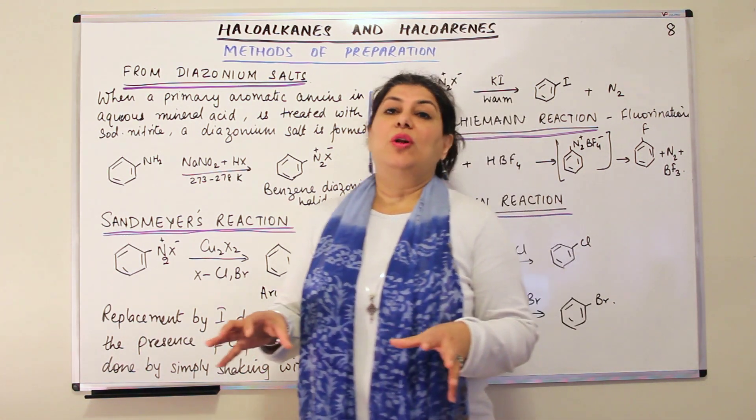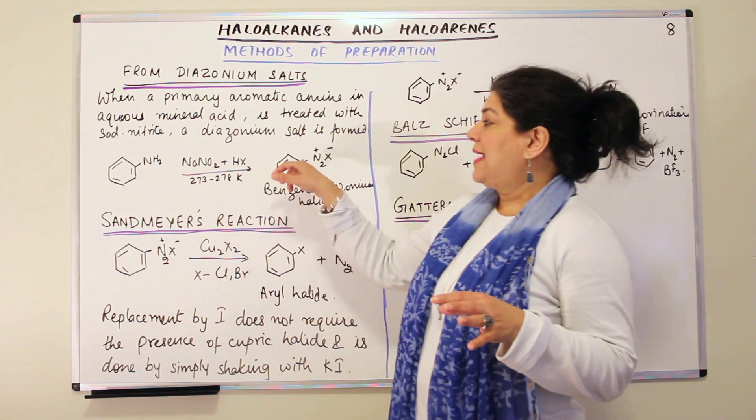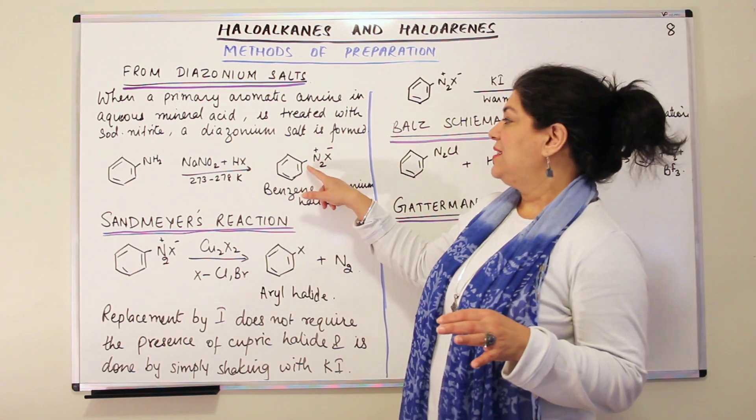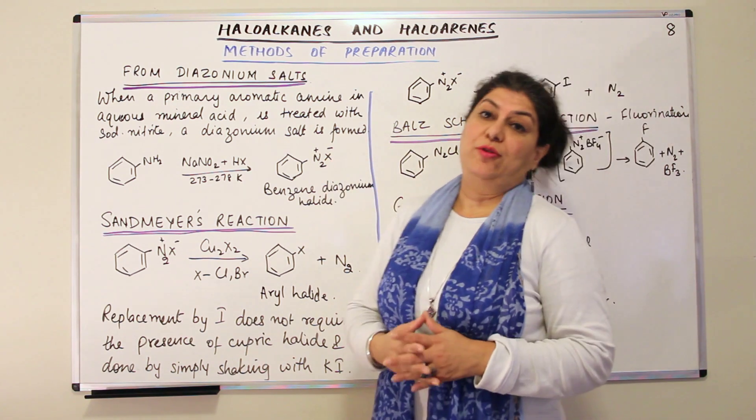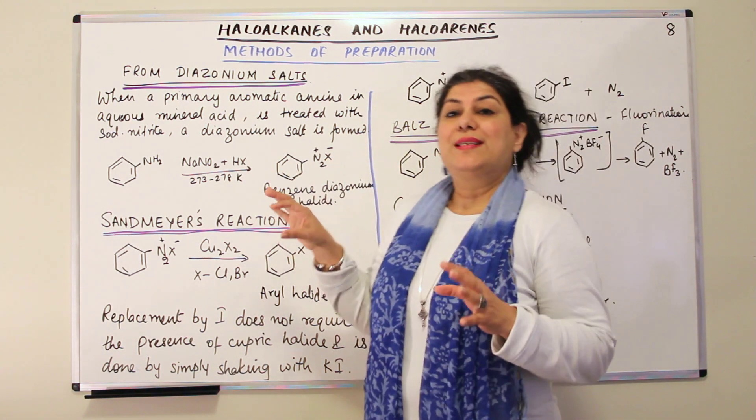A diazonium salt is one that has a formula in which the benzene ring is substituted by N2X, where X is a halogen. And how is it prepared?